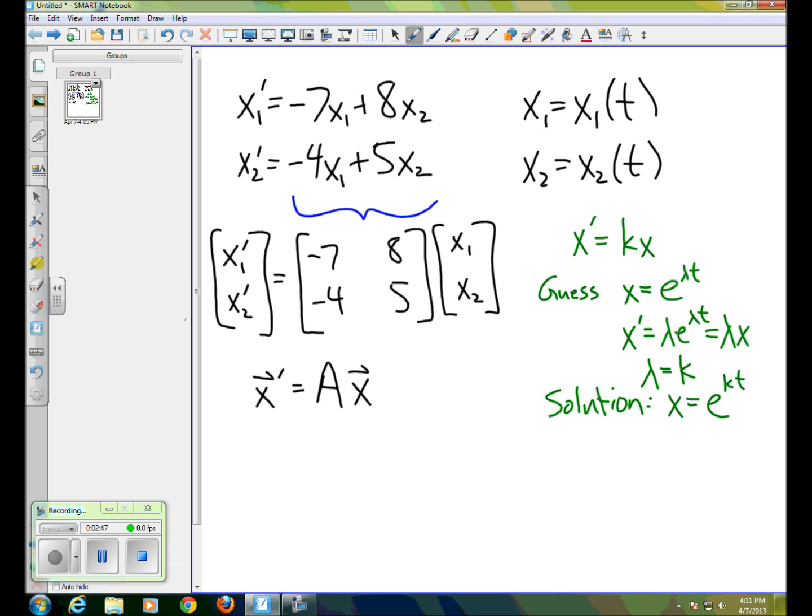Now, we would notice though, that if x was to equal some constant c times e to the kt, then x prime would be equal to that constant times k times e to the kt, which is then just k times x. So not only is e to the kt a solution, but so is any constant times e to the kt.